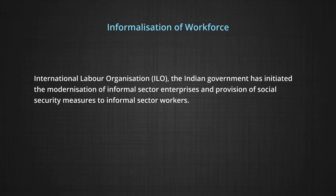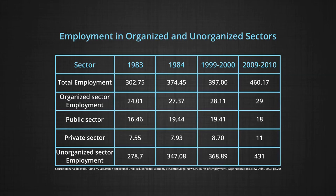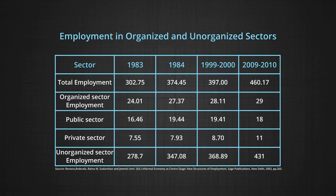On the efforts of the International Labour Organization (ILO), the Indian government has initiated the modernization of informal sector enterprises and provision of social security measures to informal sector workers so that they can also lead a decent life. As shown in Table 1 on employment in organized and unorganized sectors, with the passage of time there has been an increase in employment provided by the unorganized sector, whereas jobs in the public and organized sectors are stable. The share of the unorganized sector has increased, while the organized sector has not generated much employment in the recent period.